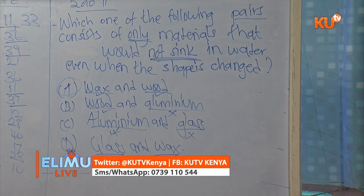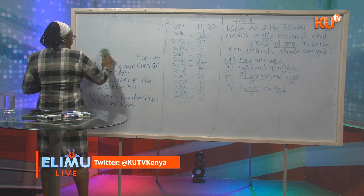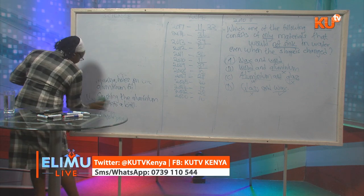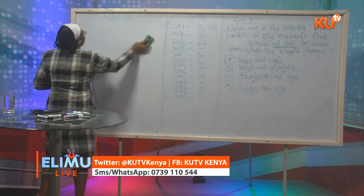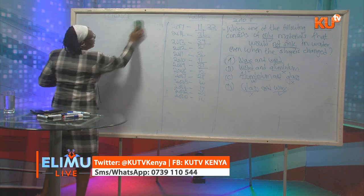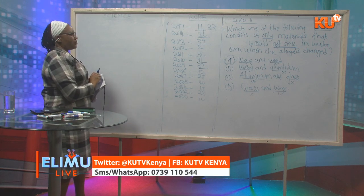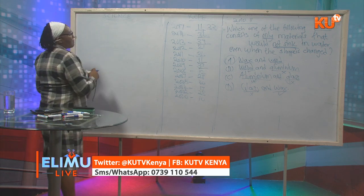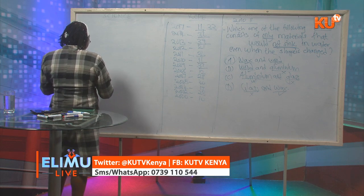These questions help us determine which aspect is being investigated among the three aspects. Remember: only shape and material affect floating and sinking. Size is investigated just to confirm that it does not affect floating and sinking.